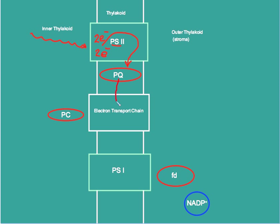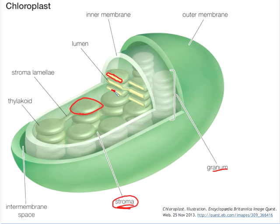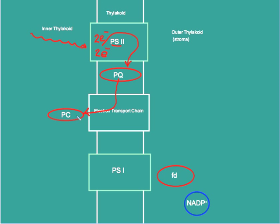These electrons move over a range of acceptor molecules, eventually transferring to the liquid-filled inner thylakoid area and to a hydrophilic molecule known as plastocyanin. As this transfer occurs, it releases sufficient energy for hydrogen ions to be moved from the outer thylakoid — the stroma, where concentration of the ions is fairly high — to the lower concentration area in the inner thylakoid, moving these ions against a concentration gradient using the energy released from the transfer of electrons.